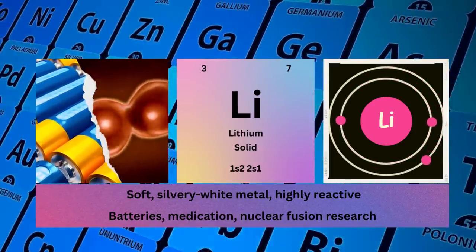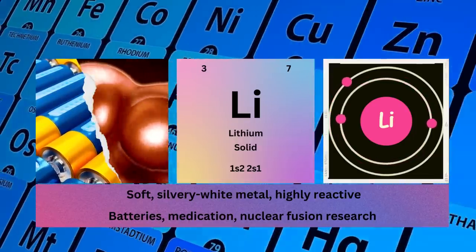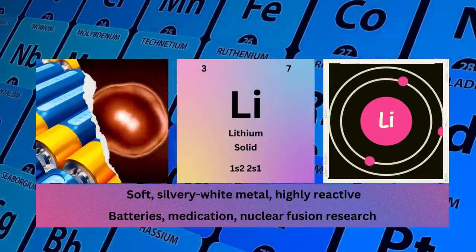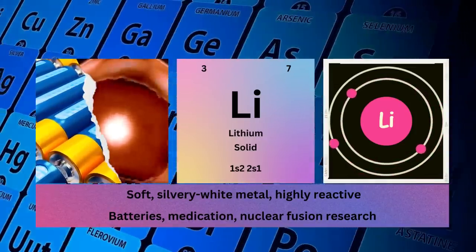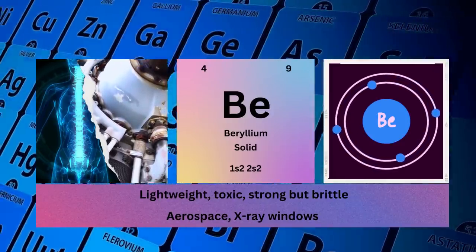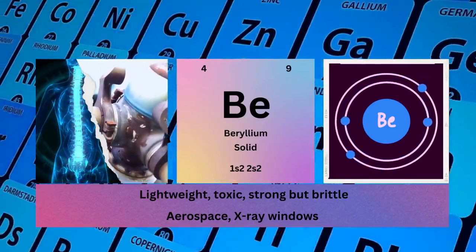Symbol Li, state solid, electronic configuration 1s2 2s1. Physical properties: soft silvery white metal, highly reactive. Lithium uses: in batteries, medication, and nuclear fusion research. Beryllium: atomic number 4, mass number 9, symbol Be, state solid.